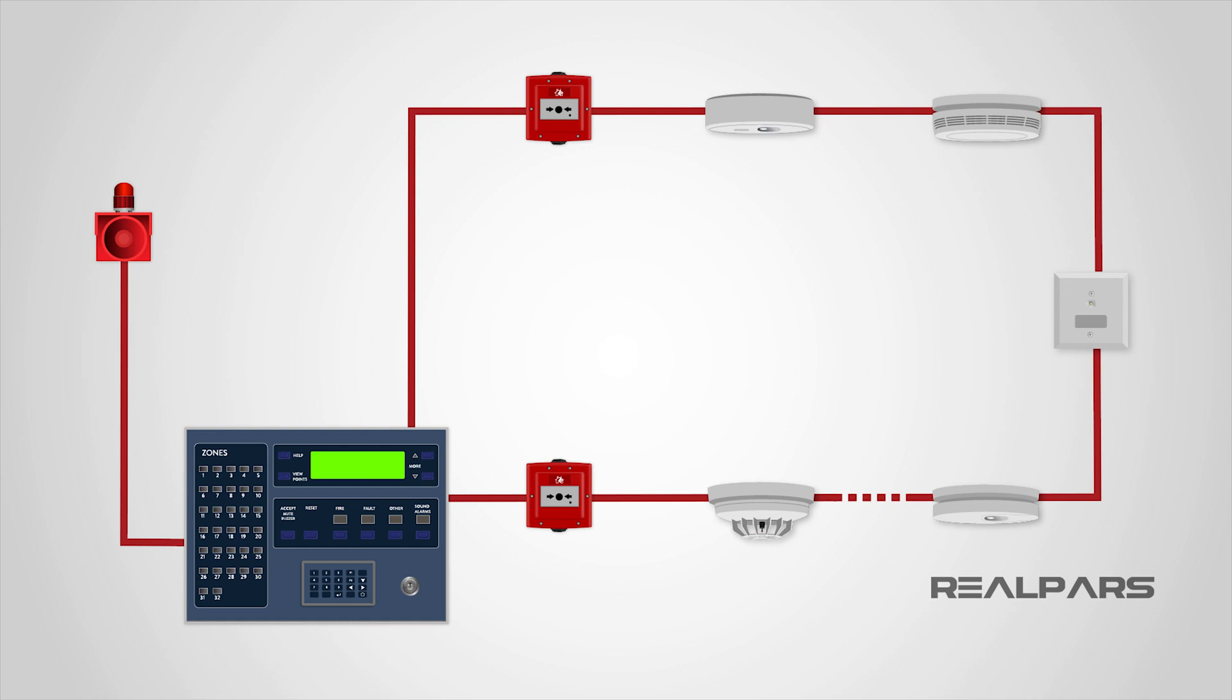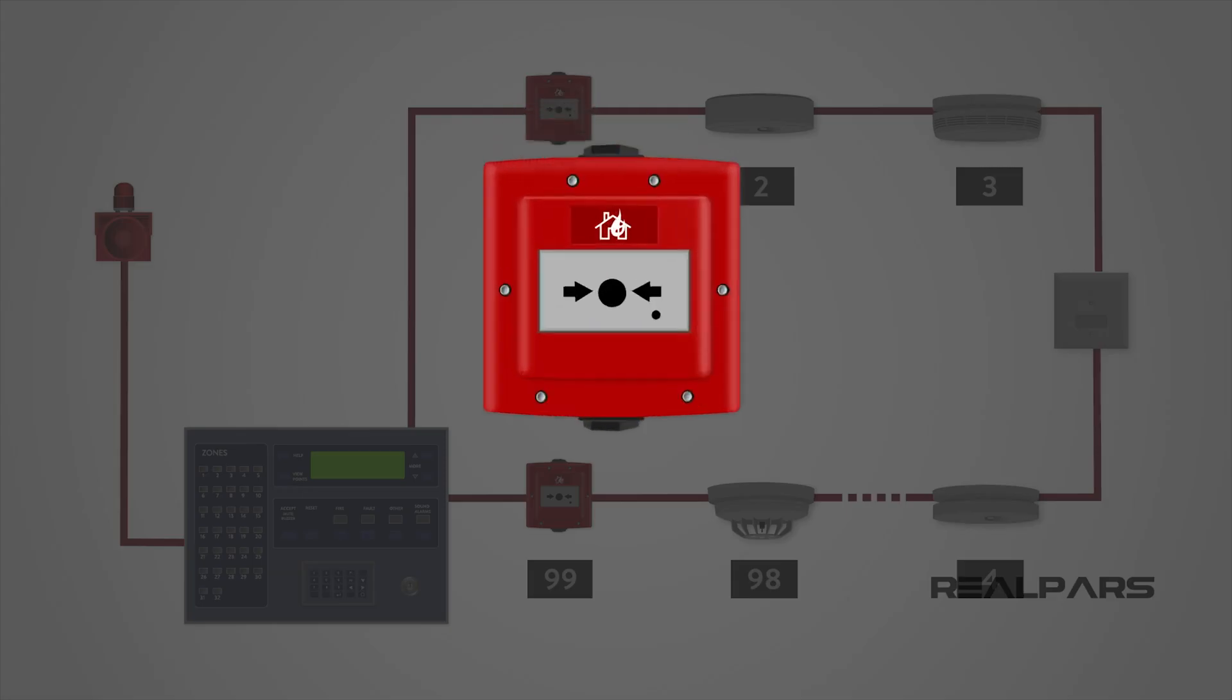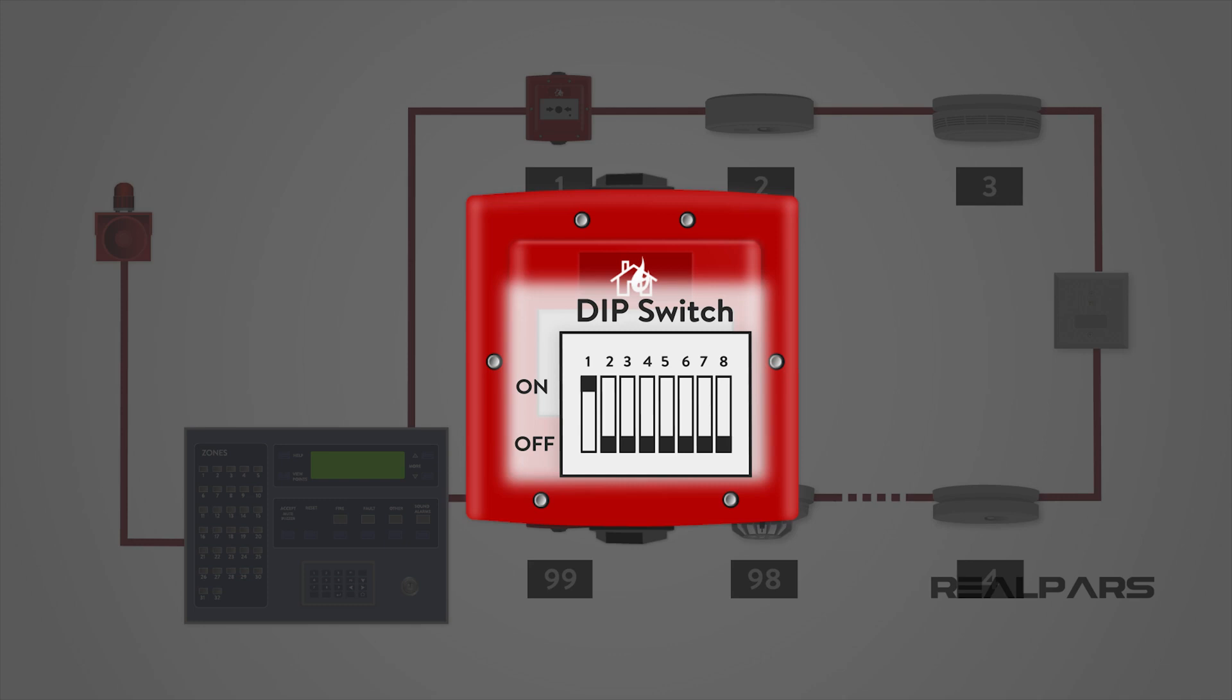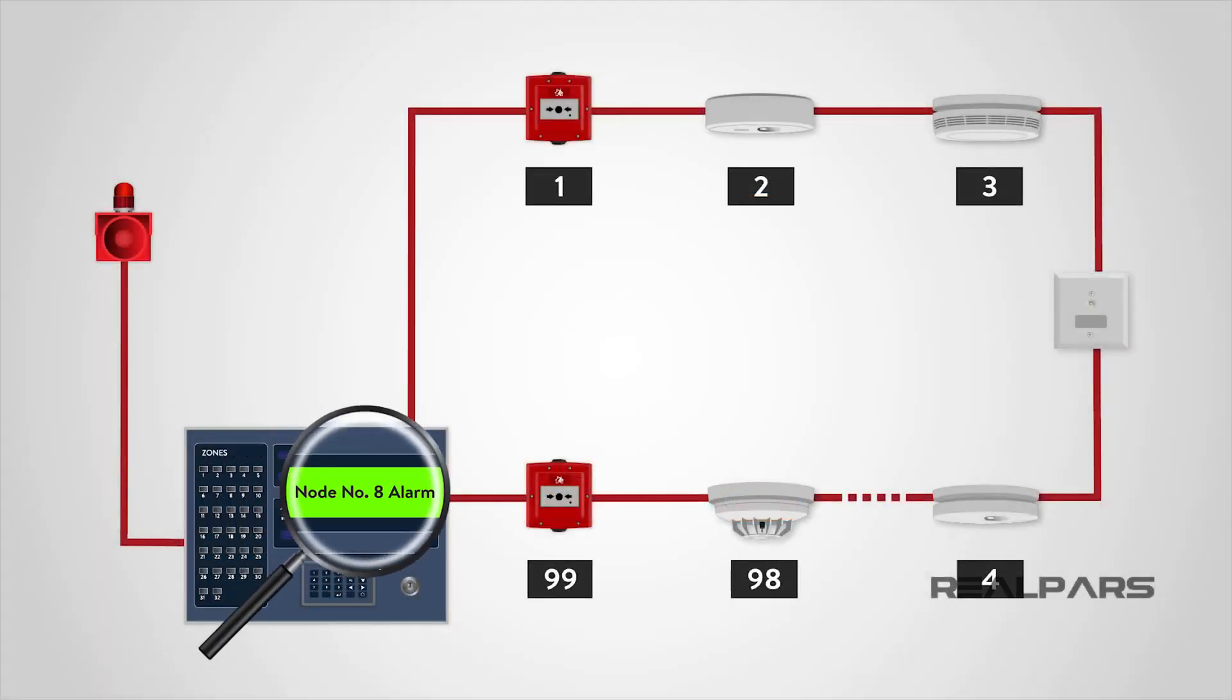The detection principle of an addressable system is the same as a conventional system, except that each detector is given a set address, usually by means of a DIP switch, and the control panel can then determine exactly which detector, or call point, has initiated the alarm.